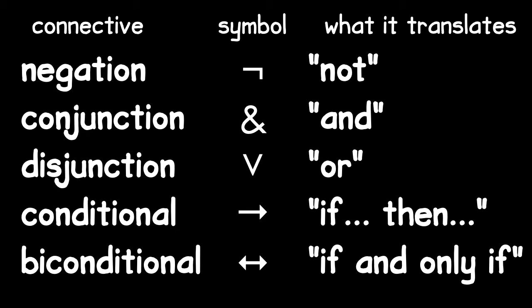We have negation, which we use to symbolize not, or it's not the case. Conjunction, which we use to symbolize and. Disjunction, which we use to symbolize either or. The conditional, if, then. And the biconditional, if and only if. And each of these has a different symbol.